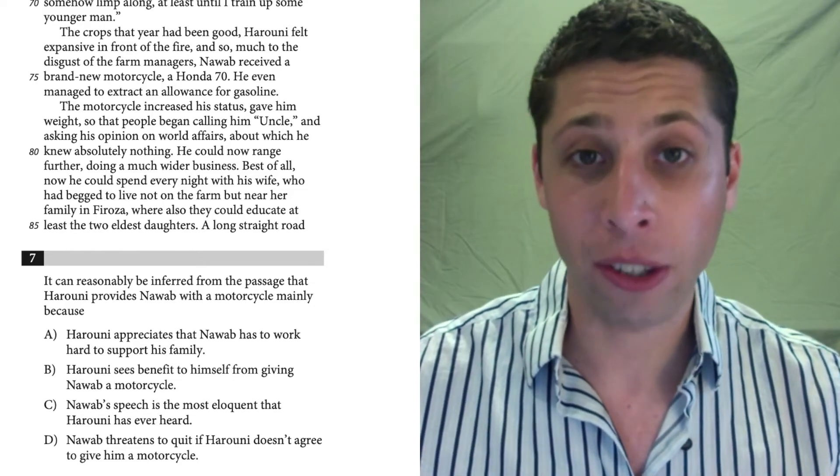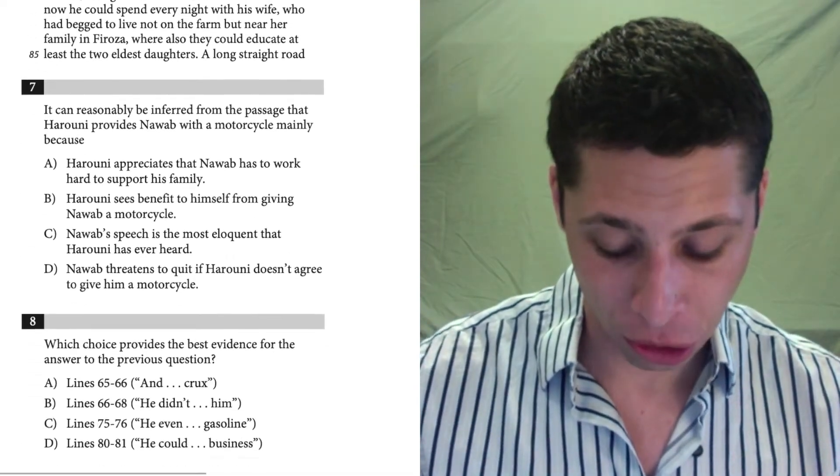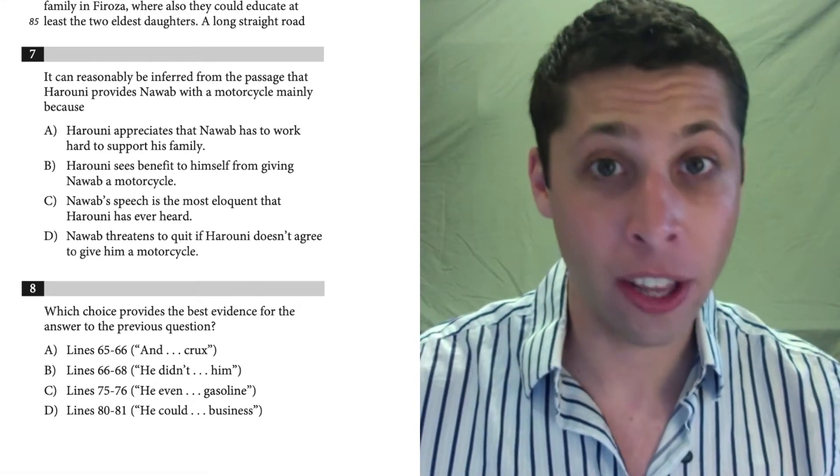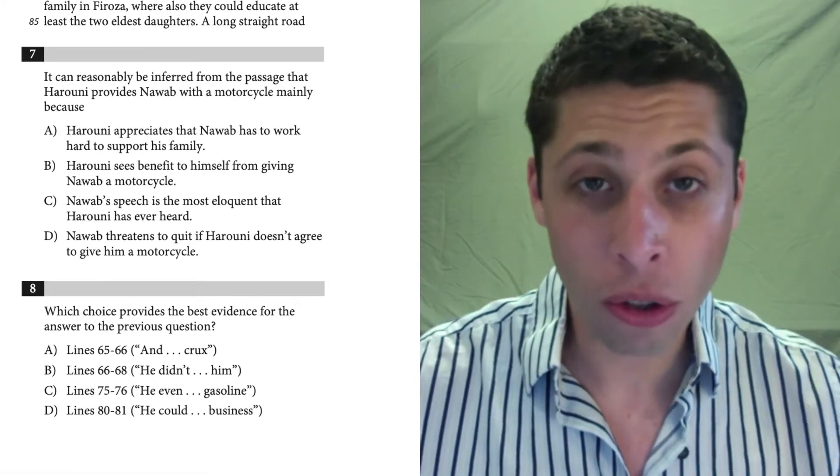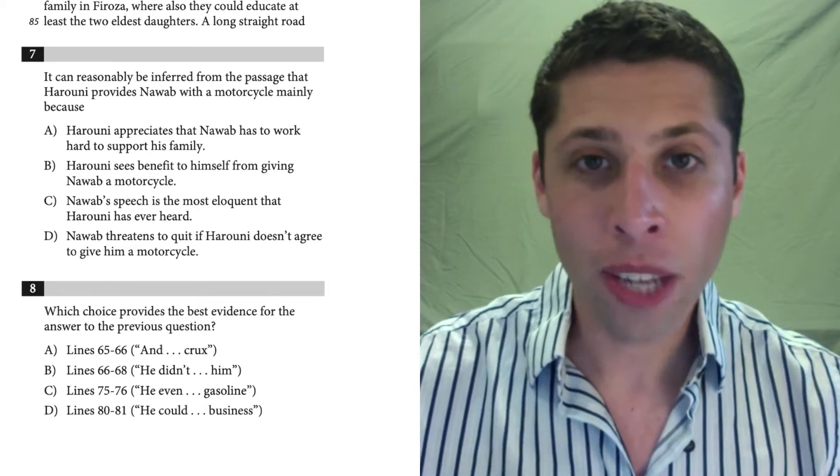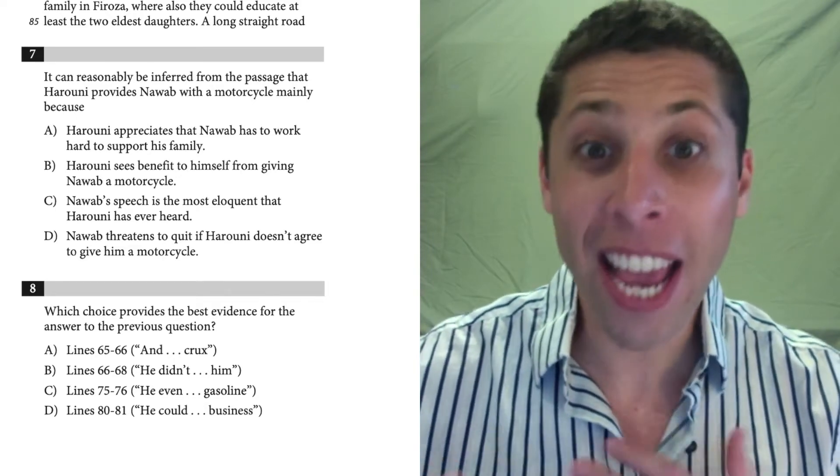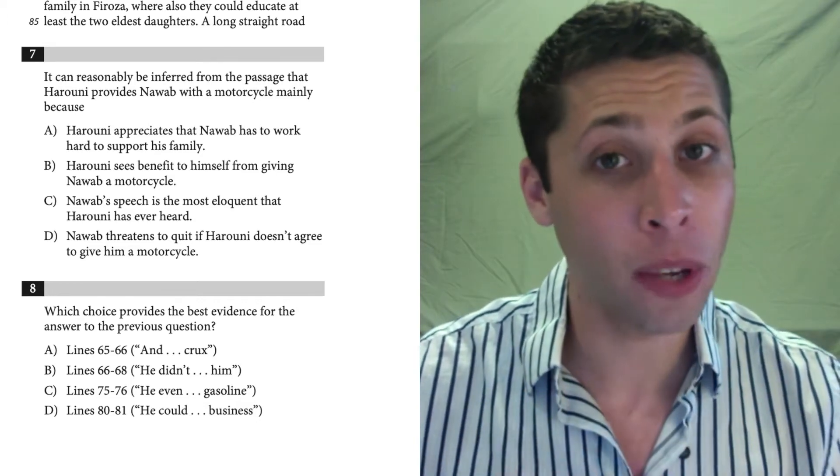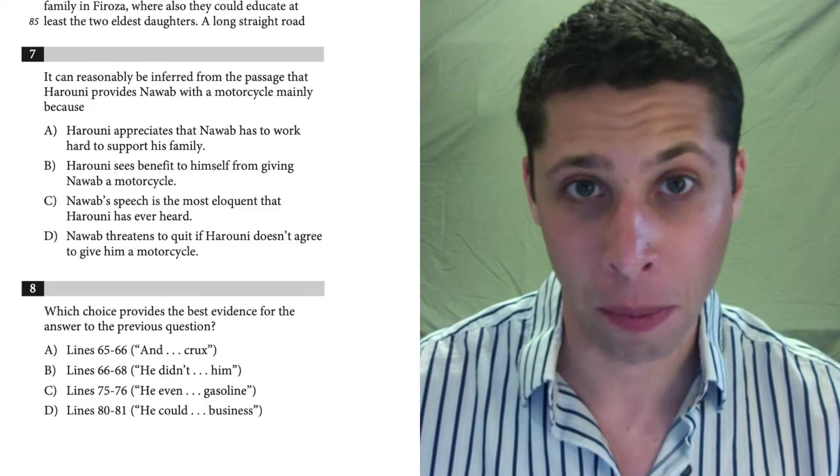Well, I just go to the next question and see if it gives me a line reference. And sure enough, number eight is an evidence pair that goes with number seven. So these two questions are linked. Seven doesn't have a line reference, but eight gives me four line references that I'm going to use to solve this question. So I still am okay not having read the entire passage.